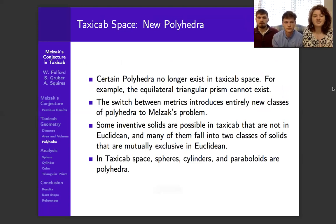So when we switch from Euclidean geometry to taxicab geometry, certain polyhedra no longer exist. For example, an equilateral triangle does not exist anymore because I can't physically make the points touch when every side is the same length.